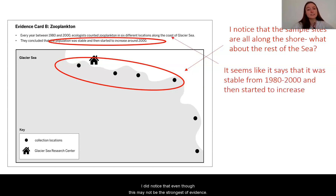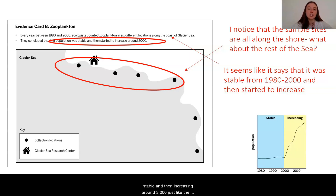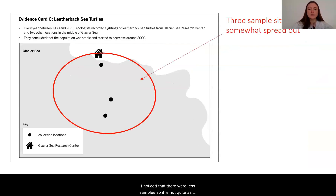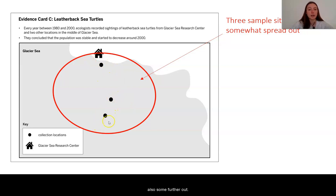Even though this may not be the strongest evidence, it is backing up evidence card A — the population was stable and then increasing around 2000, just like the moon jelly populations. In evidence card C, I noticed that there were fewer samples, so it is not quite as reliable as the zooplankton evidence, but I am happy to see that there is a population sample by the shore and also some further out.